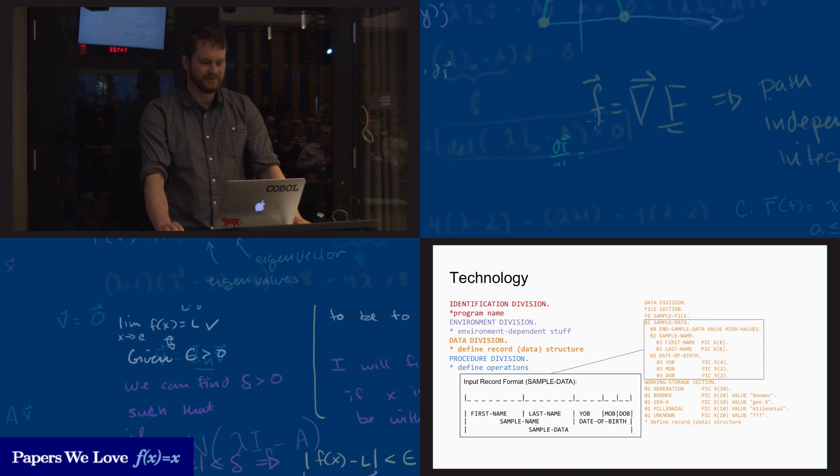The next division is the data division. The data division defines the structure of the input and output records in the file section. This basically says here's what things in the files that we're using for input and output are going to look like. Records are hierarchical. In this example here, sample name encompasses both the first name and last name field, so you could use sample name to refer to both fields at the same time. The working storage section defines variables and constants. Originally, and for a long time, all variables and constants were global.